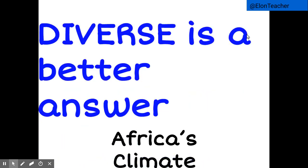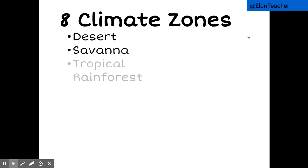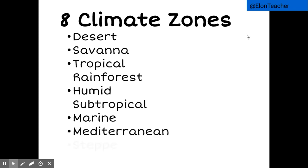There are eight distinct climate zones located in Africa: desert, savanna, tropical rainforest, humid subtropical, marine, Mediterranean, steppe, and highland. Let's look at these one at a time.